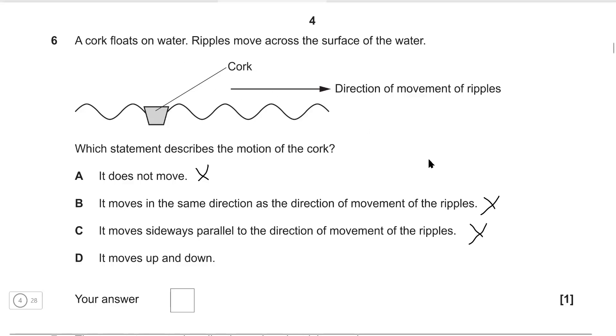In a transverse wave the direction of motion is perpendicular to the direction of motion of the wave. So it's going to be moving either up or down along this line. Correct answer is D.